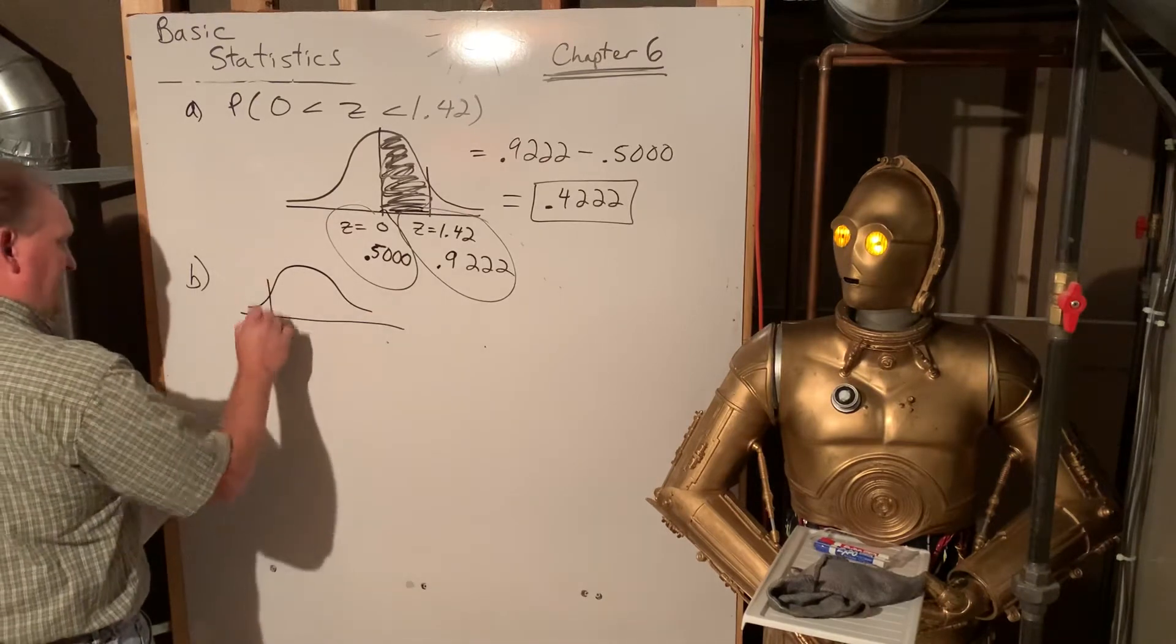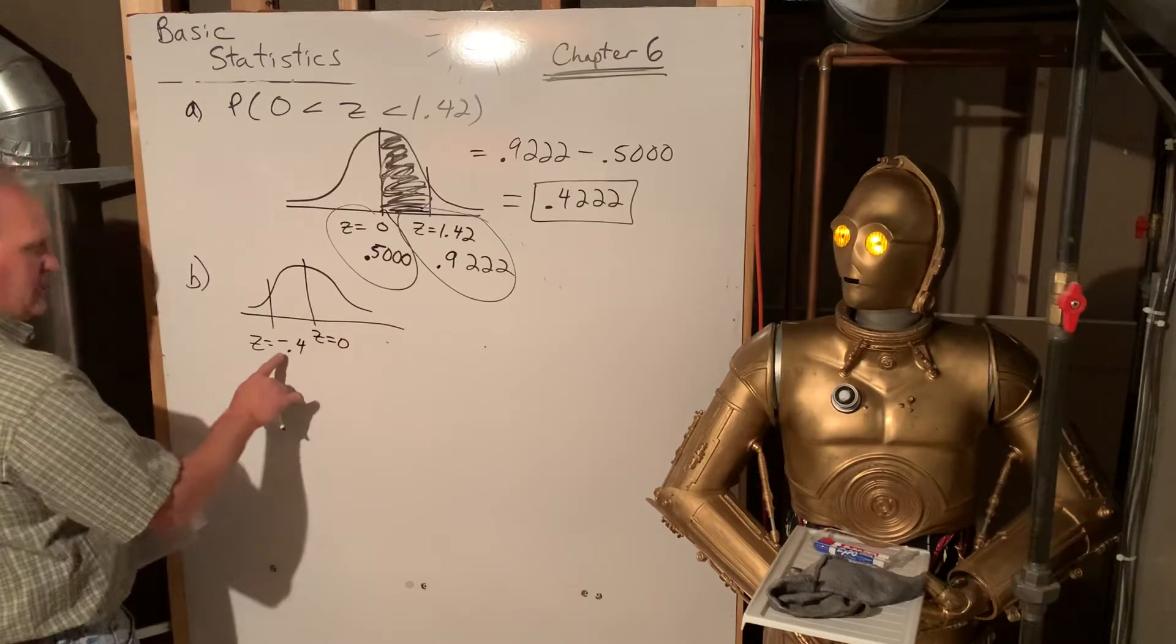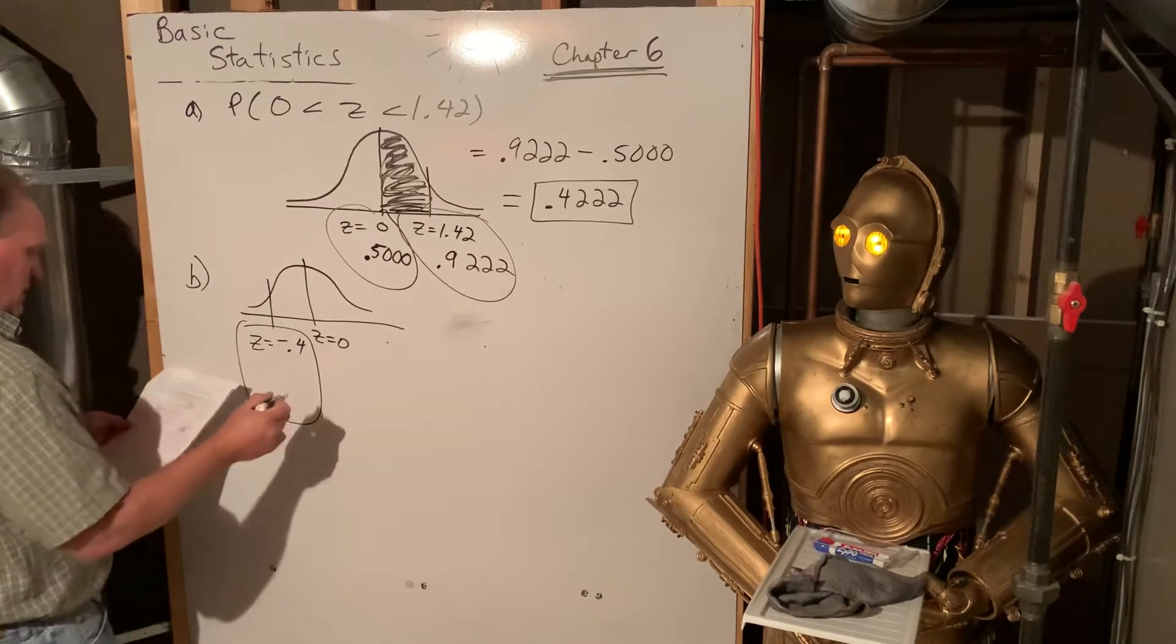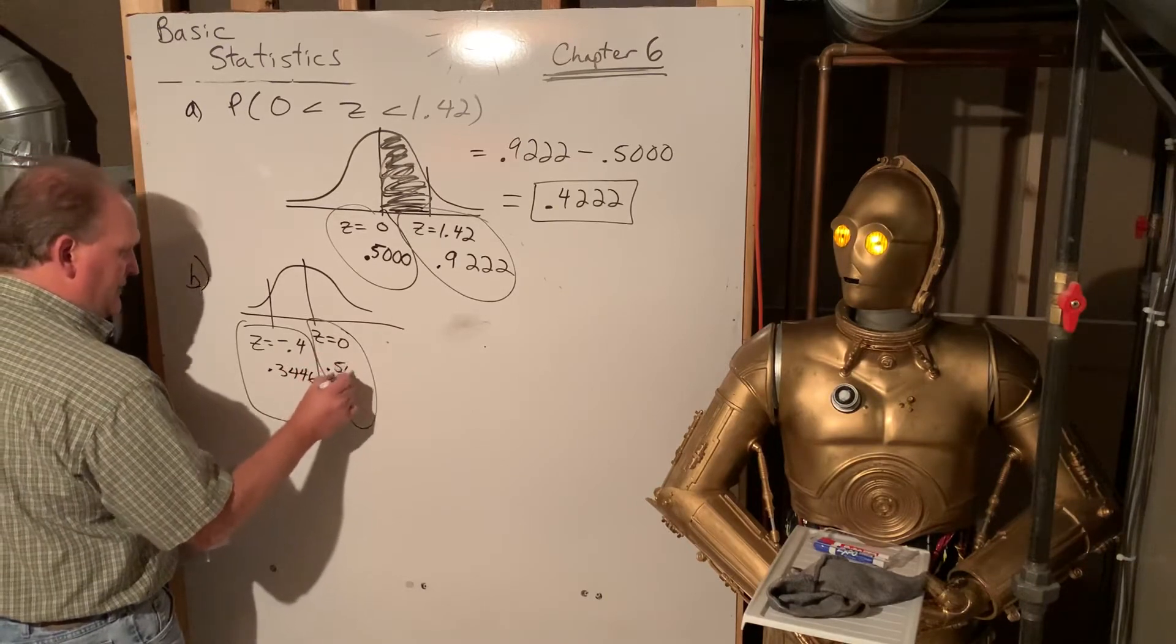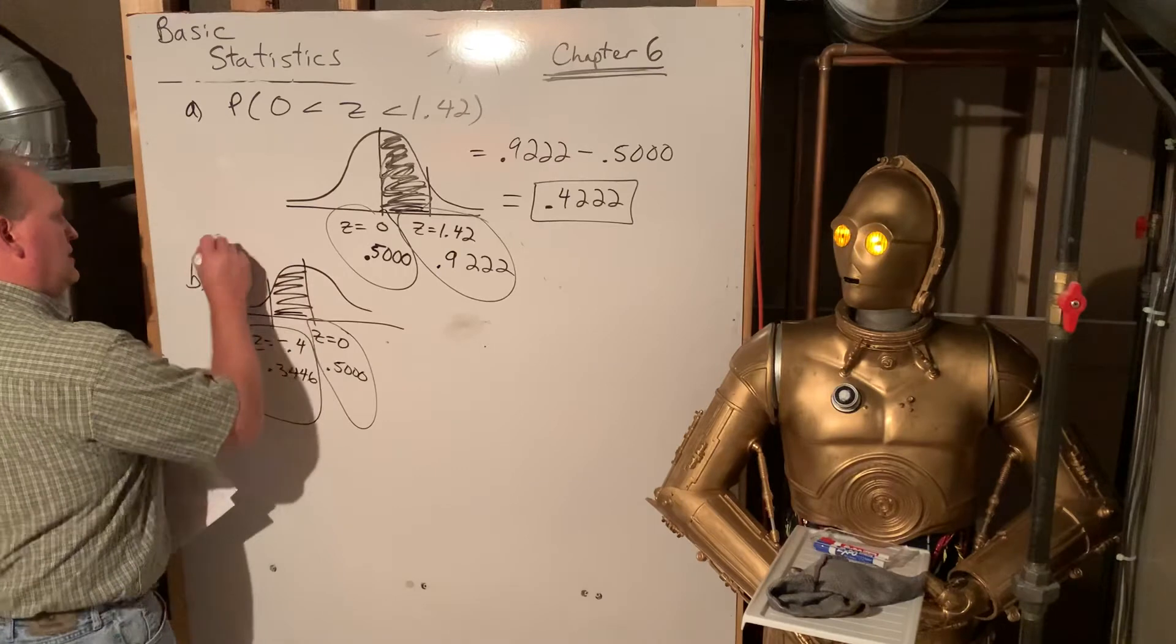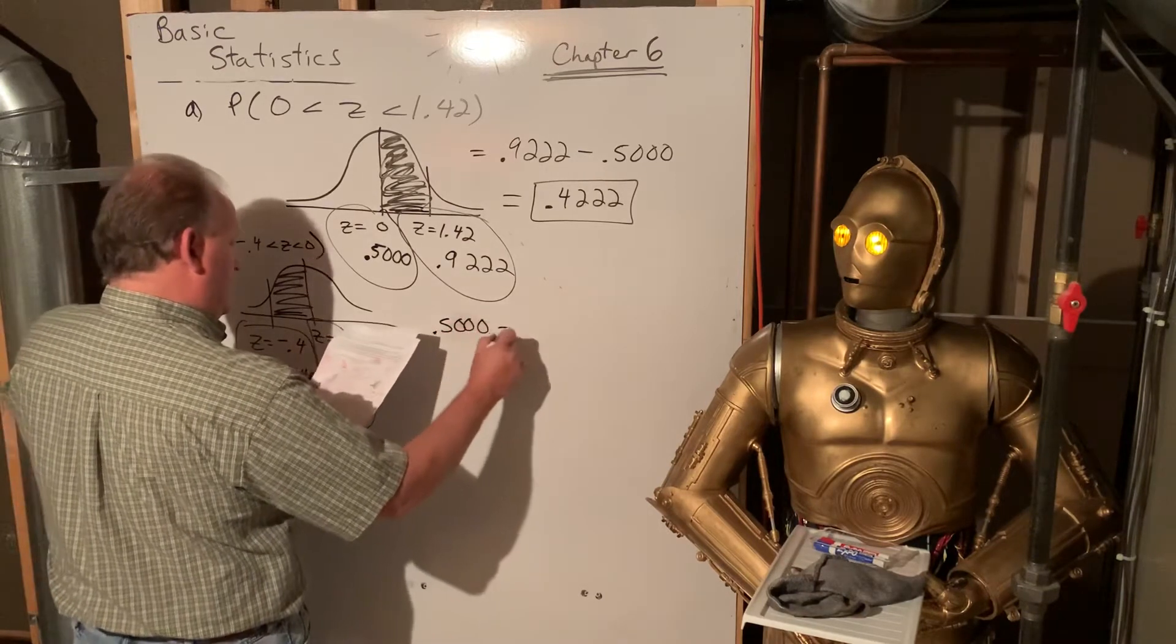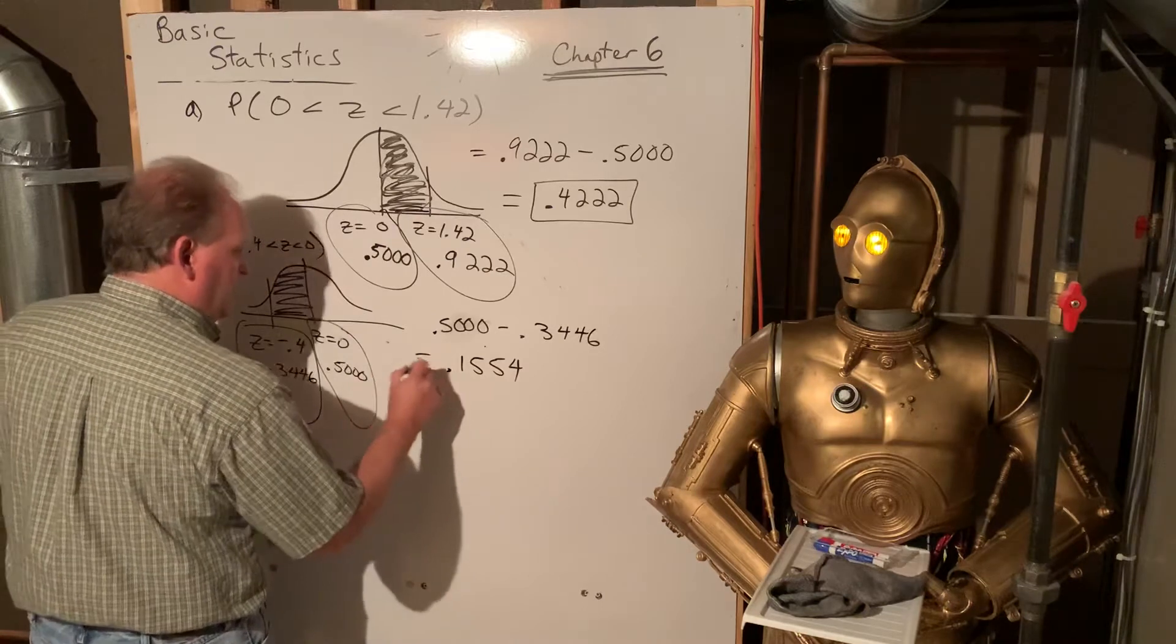And so now the rest of these just follow suit. We're going to draw a picture for each one of them. They give us Z is negative 0.4 and they give us Z equals 0 again. And so this time we look up negative 0.4. So that is also on the chart. When you look that up, you'll see it's 0.3446. Z equals 0 is always going to be, it's always 50%. It's always the dead center. And so now we want what area? We want in between those two, right? So the probability of negative 0.4 is less than Z is less than 0. So we're going to subtract those. So we're going to get 0.5000 minus 0.3446. Yeah, we're at about 15%. 0.1554. I guess closer to 16%.